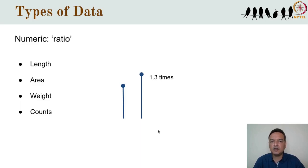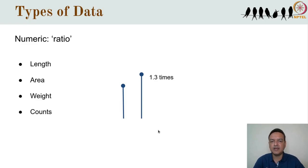Measures associated with a true zero are called ratio scale data, because ratios of such numbers make sense, in addition to the intervals being uniform and there being an order among them. Examples include length, area, weight, counts, and so on. All of these have true zeros, and saying that the height of this tree is 1.3 times the height of another, or that I have counted twice as many birds in the park compared with at the lake — all of this makes sense.